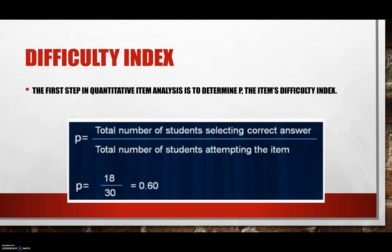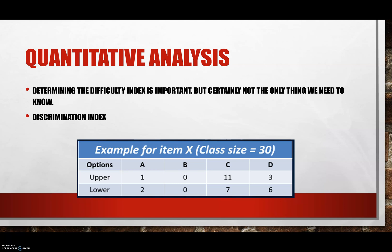The first step in quantitative item analysis is to determine P, the item's difficulty index. When P levels are less than 0.25, the item is relatively difficult; when P levels are above 0.75, the item is too easy. It might be better stated as the 'easy index' rather than the difficulty index. Determining the difficulty index is important, but certainly not the only thing we need to know—we also need the discrimination index.